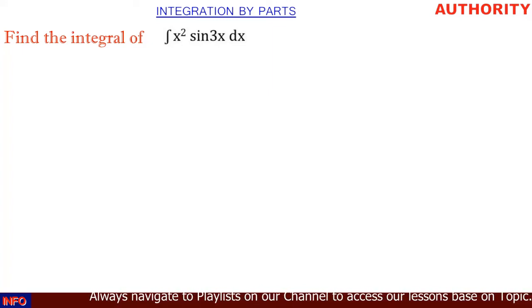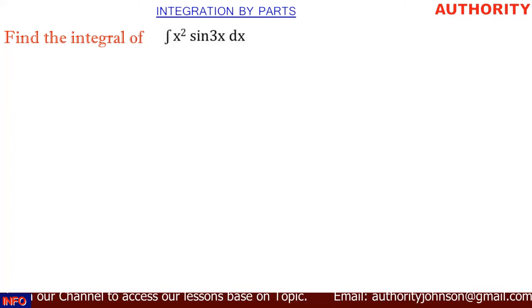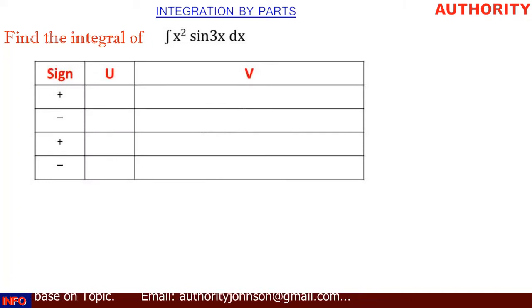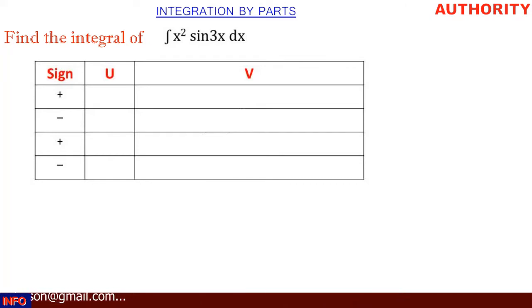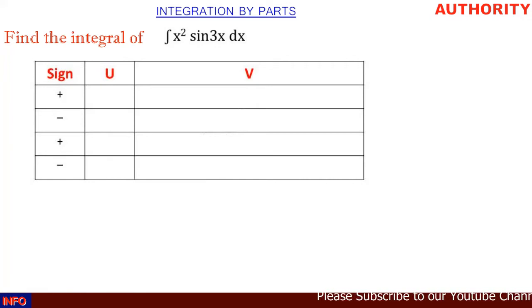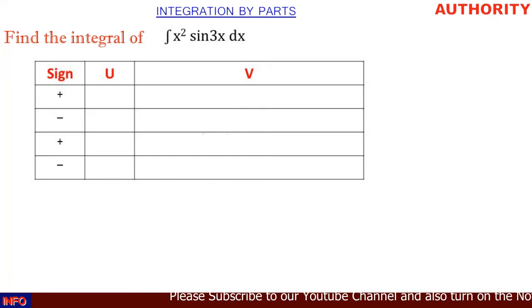We are going to use a method called the DI method. DI stands for Derivative and Integration. Draw a table with three columns: the first column will have the signs — plus, minus, plus, minus — alternating. The second column is for u, and the third column is for v.